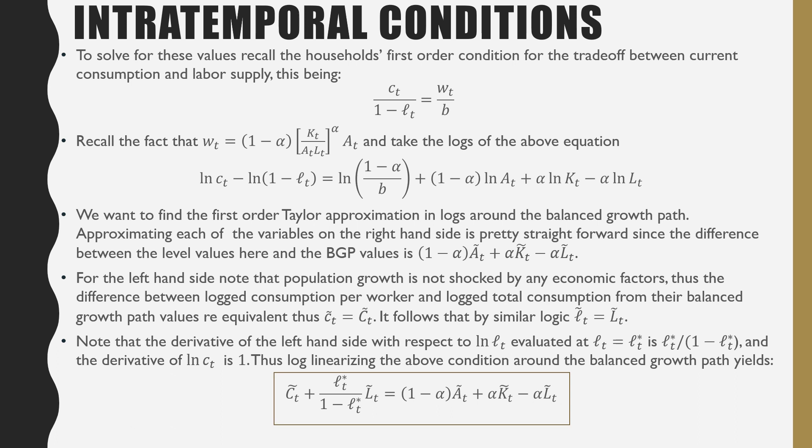Basically, literal Ct, which is the consumption per worker, is equal to the log linearized total consumption per worker. It follows by the same logic that the labor supply per worker is equivalent to Lt, which is the labor stock. Those are the log linearized versions.